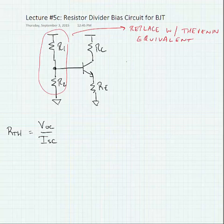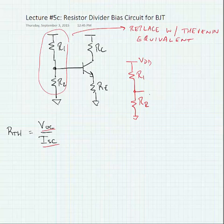So what we're going to do is take our circuit and we're going to find the open circuit voltage and the short circuit current. So for open circuit voltage, we have our supply voltage VDD and we're looking for the open circuit voltage which would occur across resistor R2.